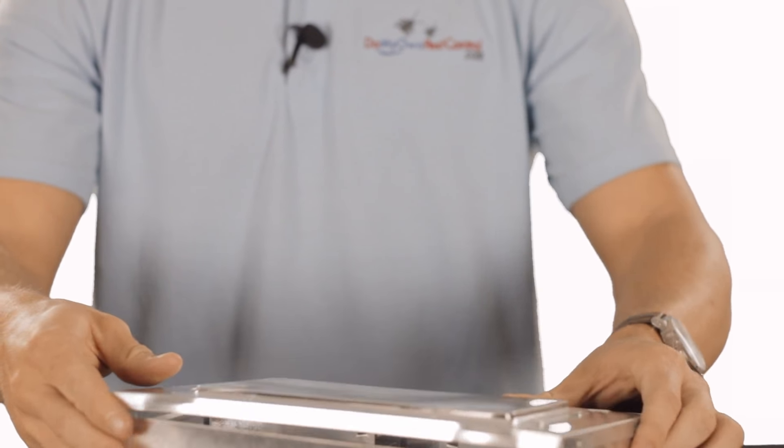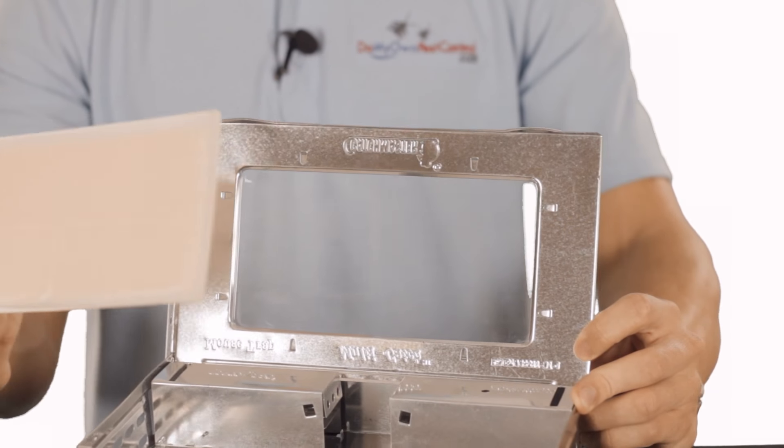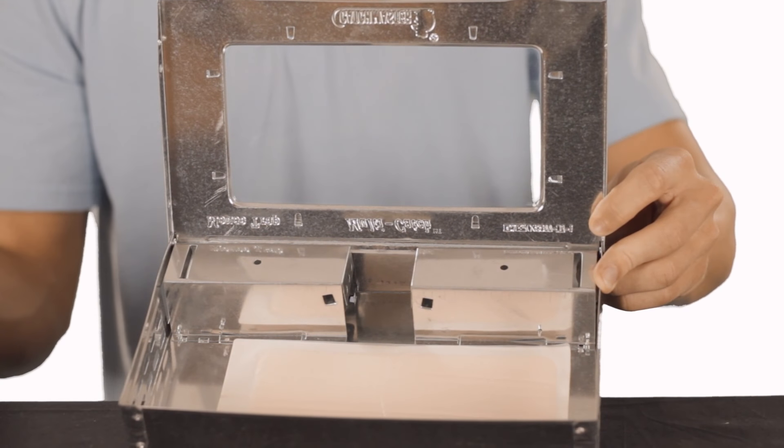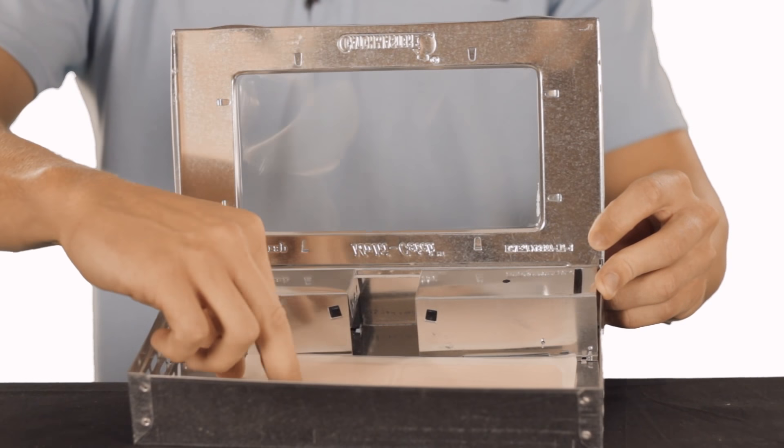But if you also want to use a glue board, you can place the glue board inside like this, and once you've caught the mice you can remove it and discard it.